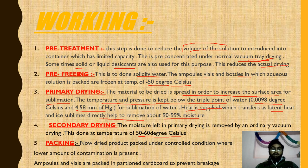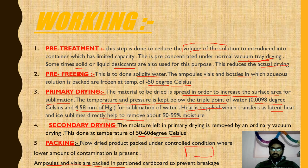After drying comes packing. The dried product is packed under controlled conditions where the amount of contamination is minimal — sterile products can also be dried this way. The vials and ampoules are placed in partitioned cardboard containers.